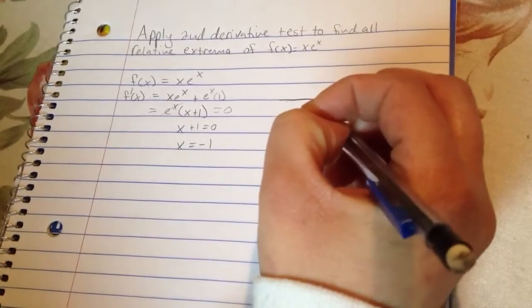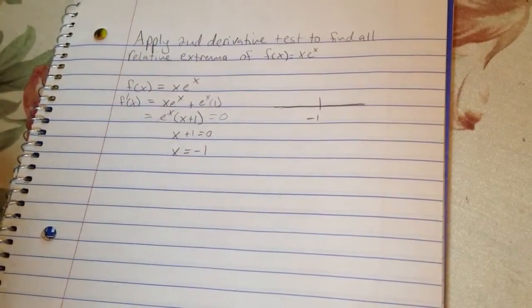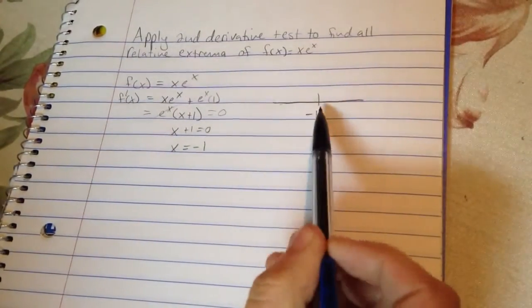So we're just going to draw our little number line there. There's our critical number.